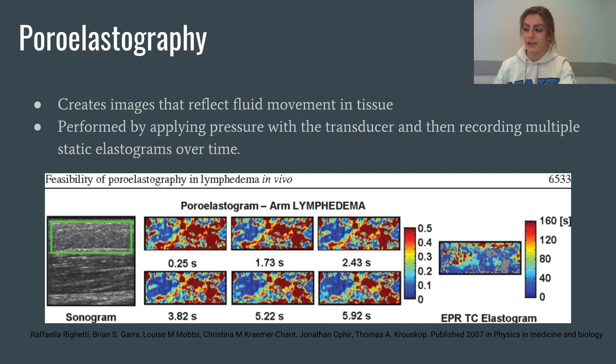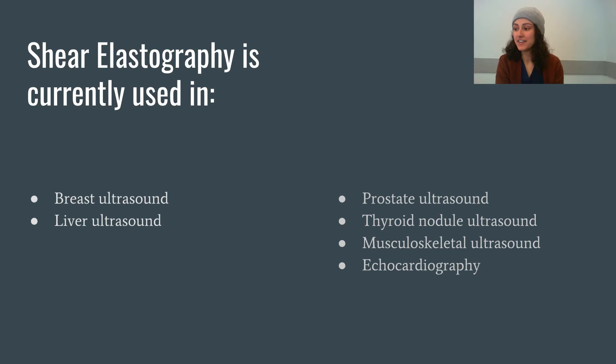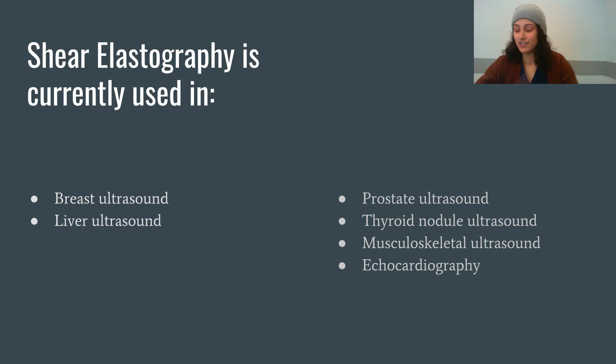The uses of shear elastography are quite similar to those of strain elastography, including breast, liver, prostate, thyroid, musculoskeletal, and also cardiography. For breast elastography, the shear waves tell us about the bulk modulus, and using the shear waves we can assess the velocity and the elasticity for each pixel. For the liver, along with looking for lesions, we use shear to evaluate stiffness and find out how far along things like fatty infiltration or cirrhosis are.